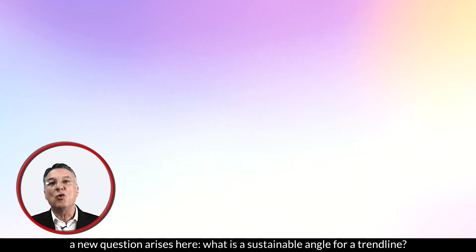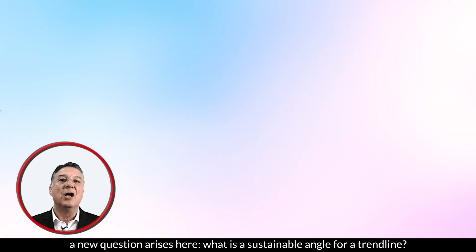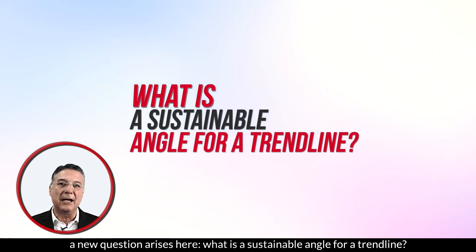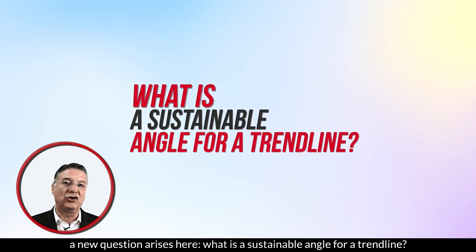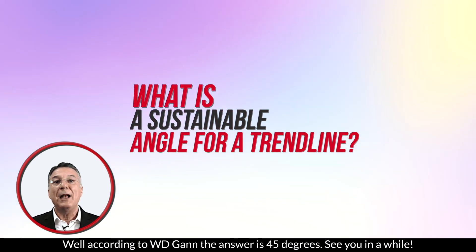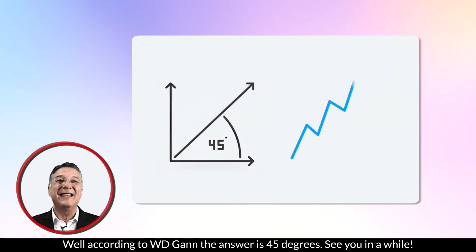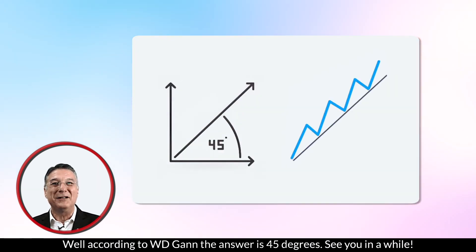Now, a new question arises here: what is a sustainable angle for a trend line? Well, according to W.D. Gann, the answer is 45 degrees.